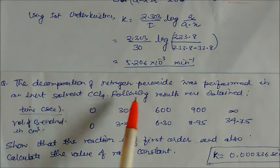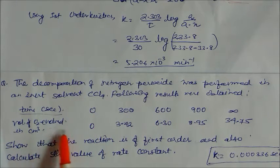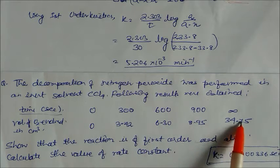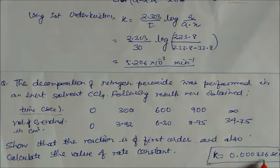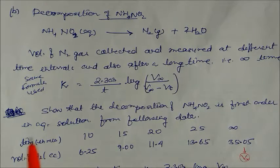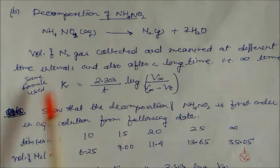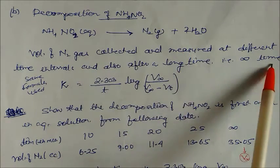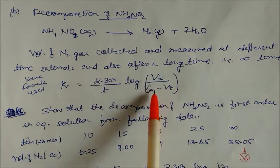A practice problem: decomposition of nitrogen peroxide in inert solvent CCl₄. Time and volume of oxygen evolved are given. Show the reaction is first order and calculate the rate constant — the answer is 0.000336 per second. Now we look at the decomposition of ammonium nitrite (NH₄NO₂) in aqueous solution, giving N₂ + H₂O. Volume of nitrogen gas is collected at different time intervals, and using k = (2.303/t) × log(V∞ / (V∞ − Vt)).